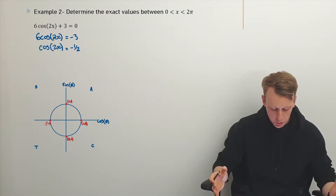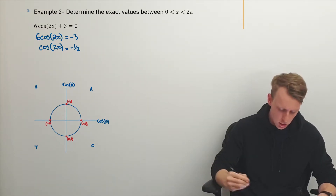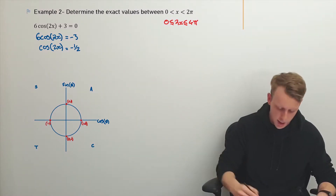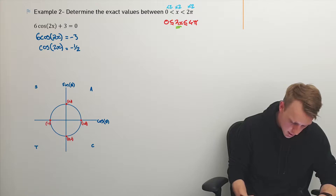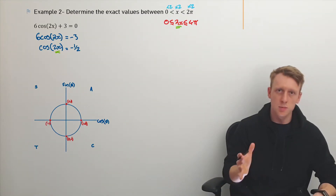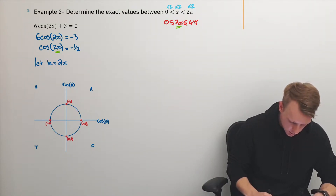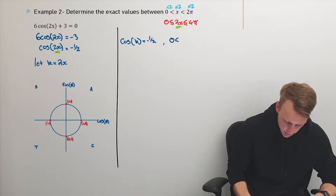I'm not really fond of having cos of 2x — I'd really prefer to just have cos of x. There are a few ways to go about this. We can change the domain to have 2x between 0 and 4π by multiplying all the inequalities. I'm going to do a little substitution here and let k equal 2x. So that implies I've got cos of k equals negative one half, with k between 0 and 4π.